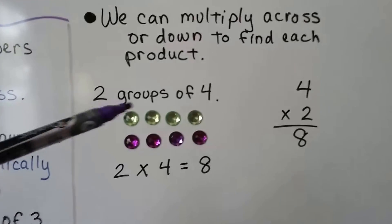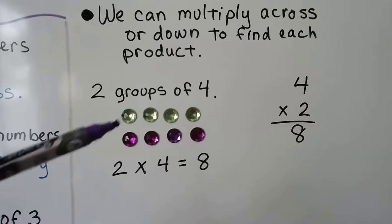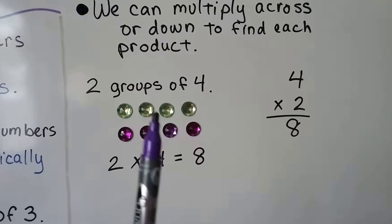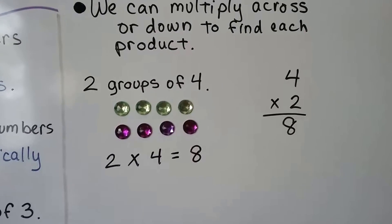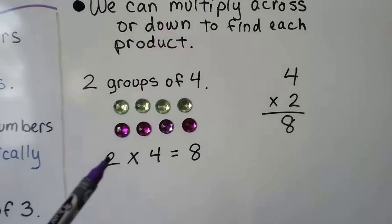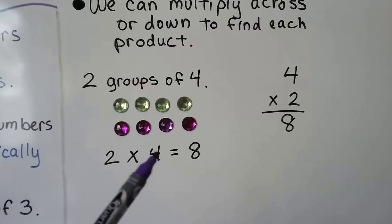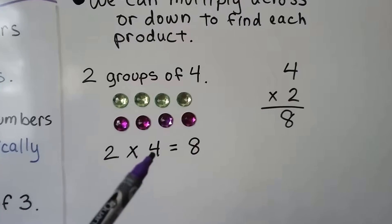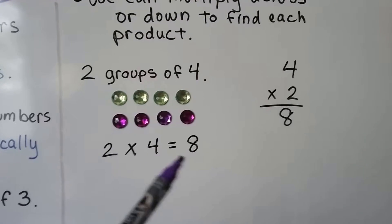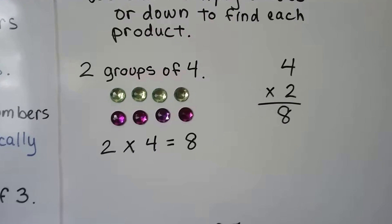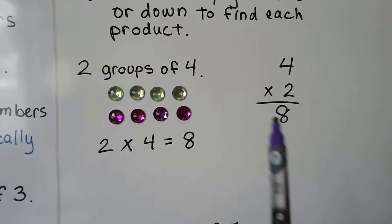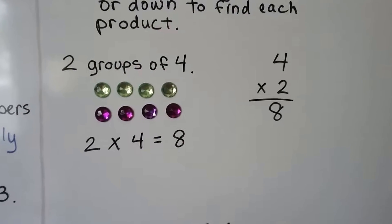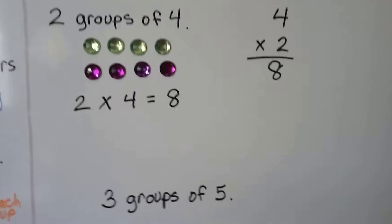Here we have two groups of four — one group, two groups — and they each have four in them. Two times four equals eight. Two groups times four in each group equals eight. Four times two equals eight. It's the same thing.